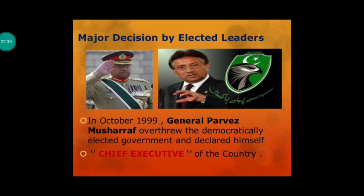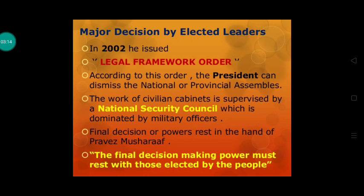One example is Pakistan. In October 1999, army general Pervez Musharraf overthrew the democratically elected government and declared himself chief executive of the country. Yaani jo chuni hui sarkar thi usko isne hataaya. In 2002, he issued a legal framework to amend Pakistan's constitution — Pakistan ki constitution mein kuch changes karna chahta tha — so that he could acquire more power. He then made himself President of Pakistan.